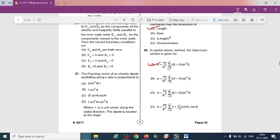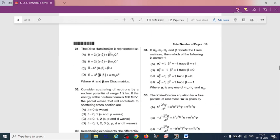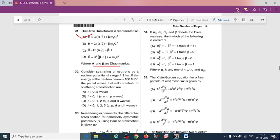This is in case of partial wave method. The Dirac Hamiltonian is represented as... this is also a direct question. So if we carefully observe, option A is correct: Hamiltonian H = c(α·p) + βm₀c², where alpha and beta are Dirac matrices.